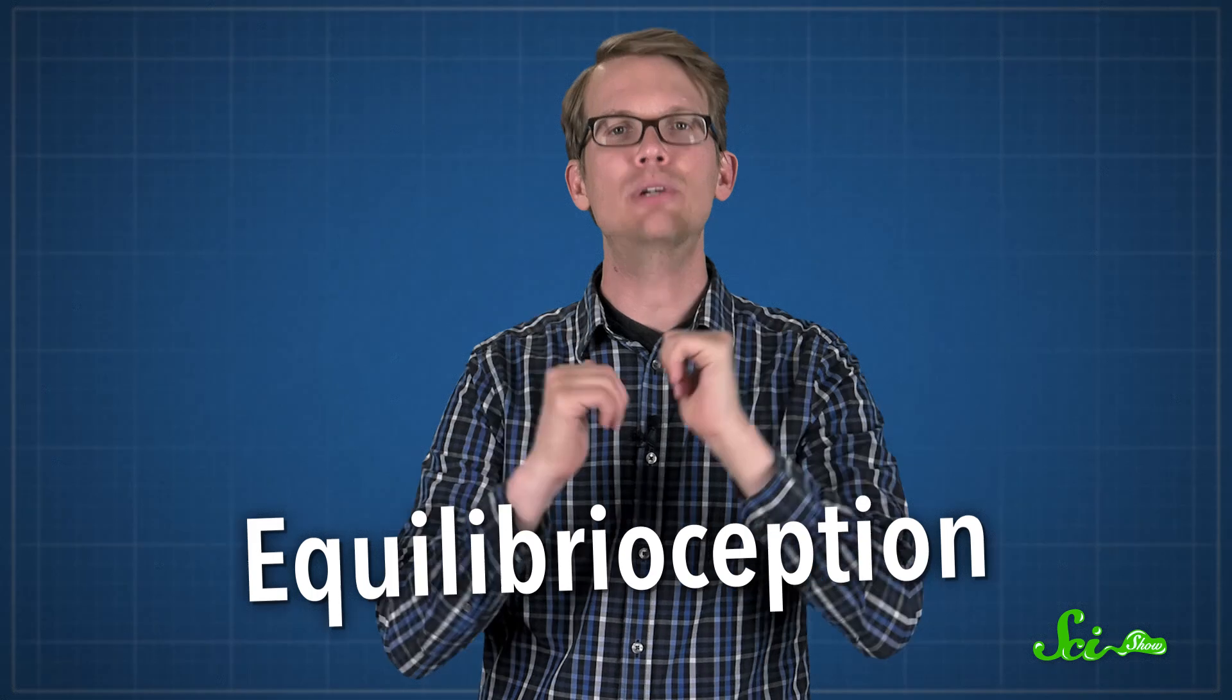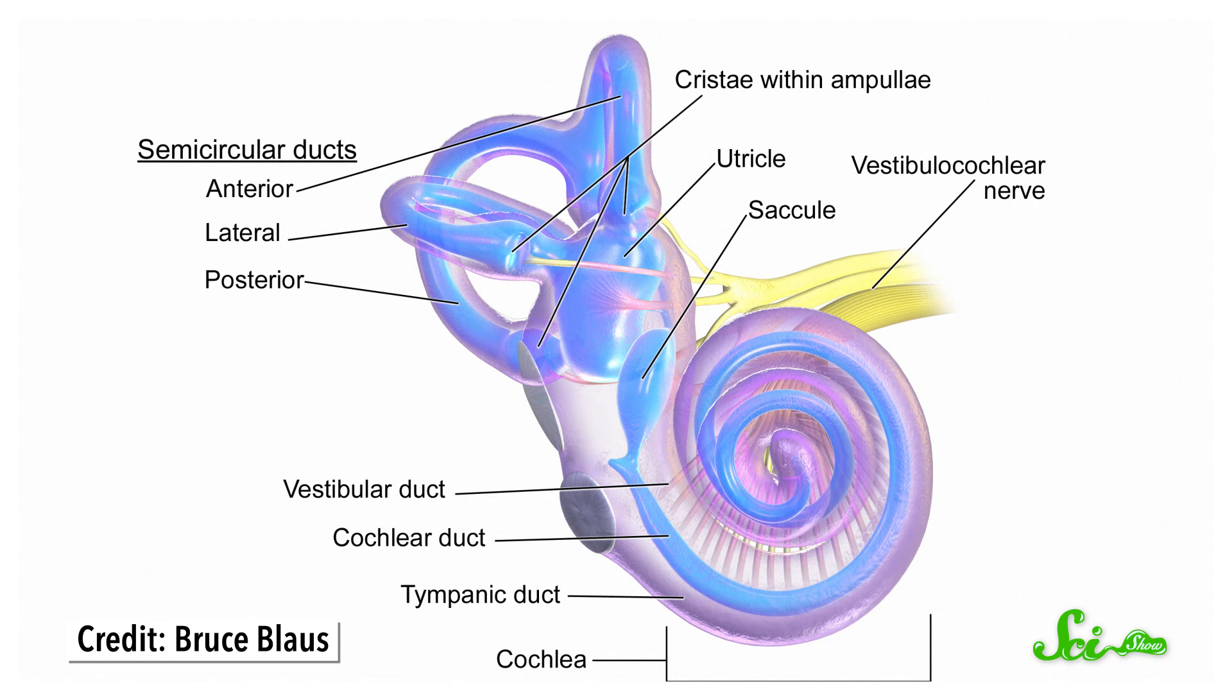Separately, we have equilibrioception, our sense of balance. And we need balance whenever we move, like walking and running. Ears are important for our sense of hearing, but they're also a key part of equilibrioception. Especially the inner ear. It contains the vestibular system, which includes three fluid-filled semicircular canals lined with tiny hair cells.